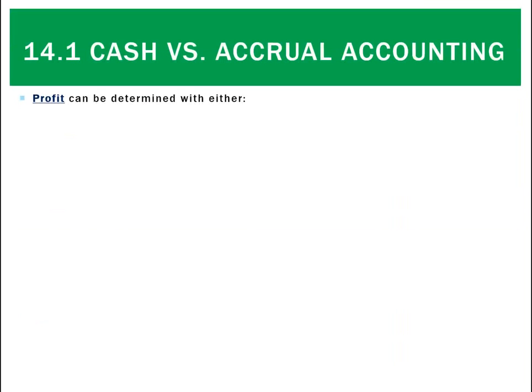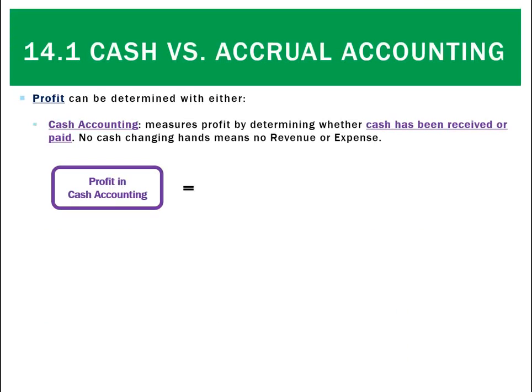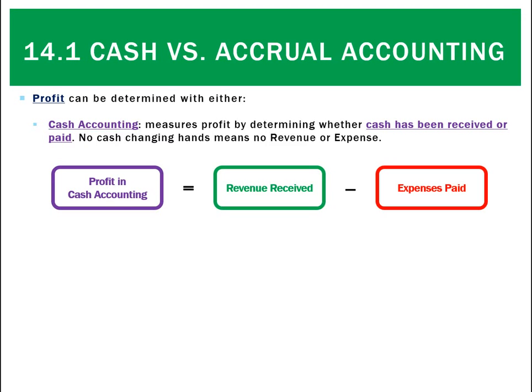In the business world there are two ways to calculate profit. One is through cash accounting, which simply measures your profit as the revenue received unless the expense is paid. So unless you've actually got the revenue — the cash in your hand — we don't count it as revenue. Conversely, if we haven't paid the actual expense, then we don't record it as an expense.